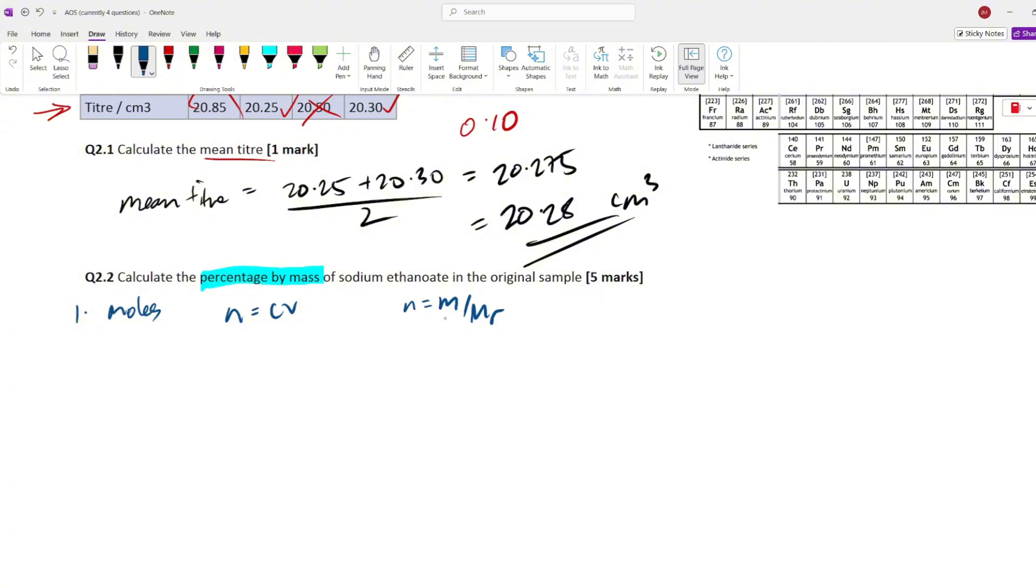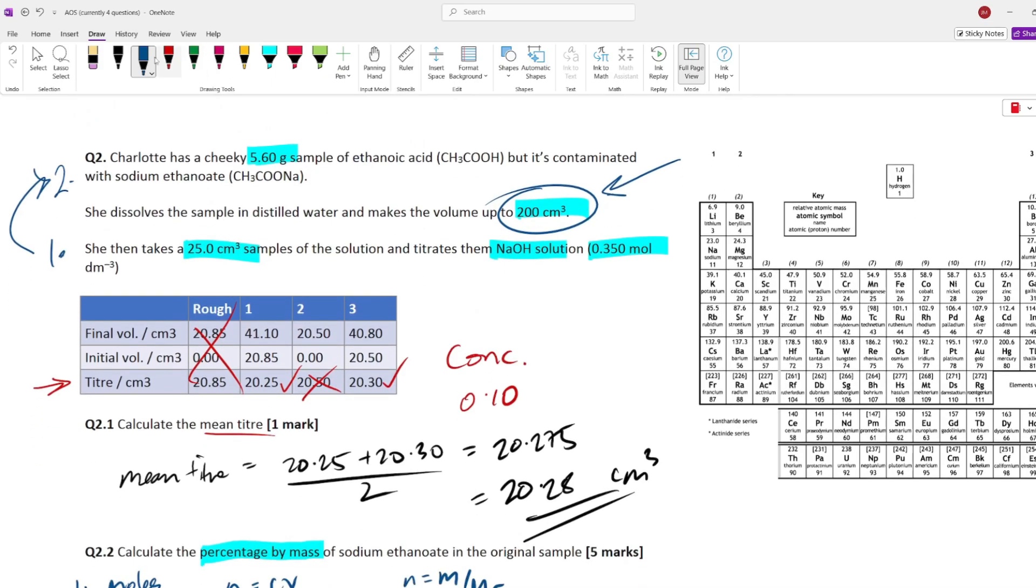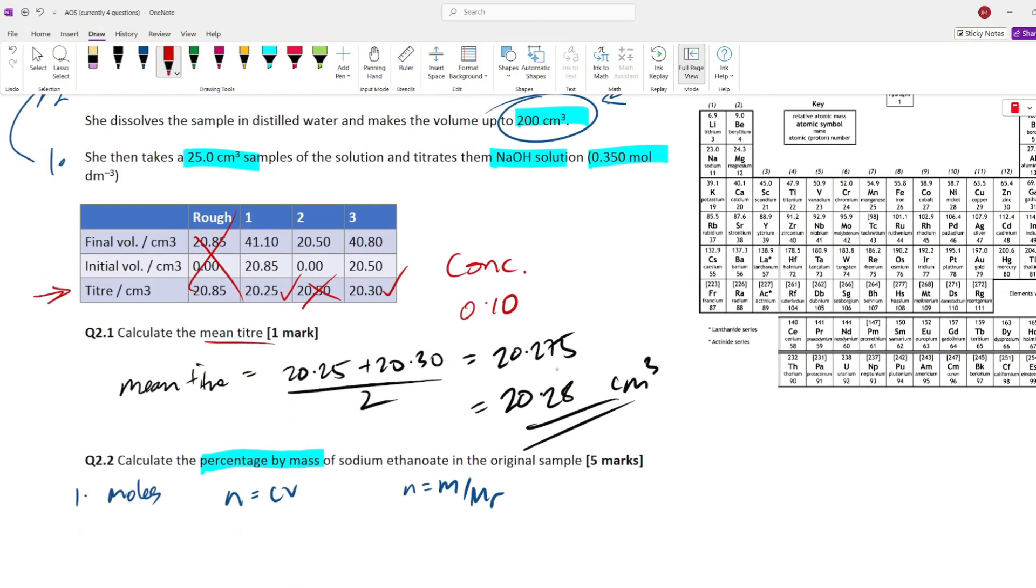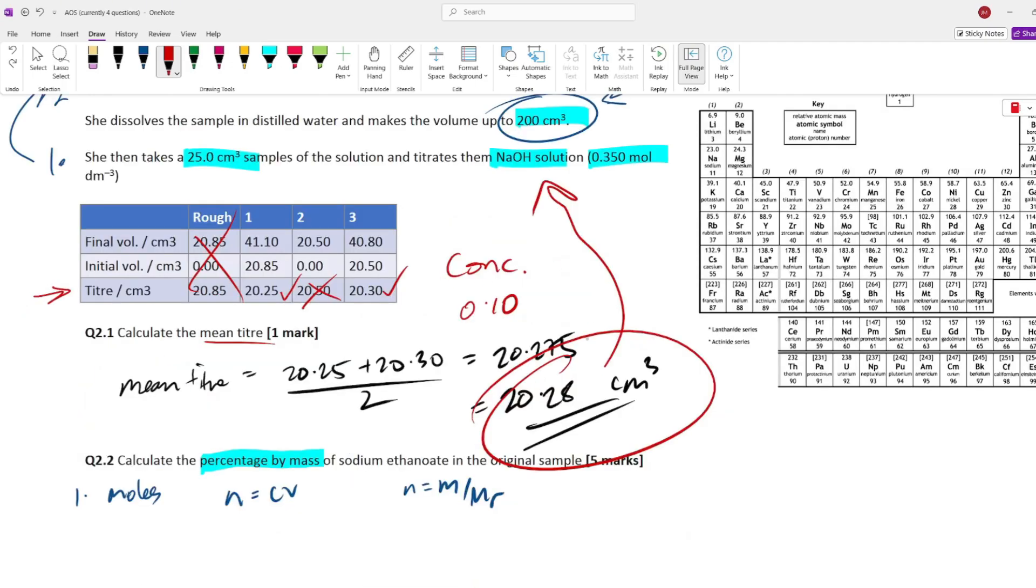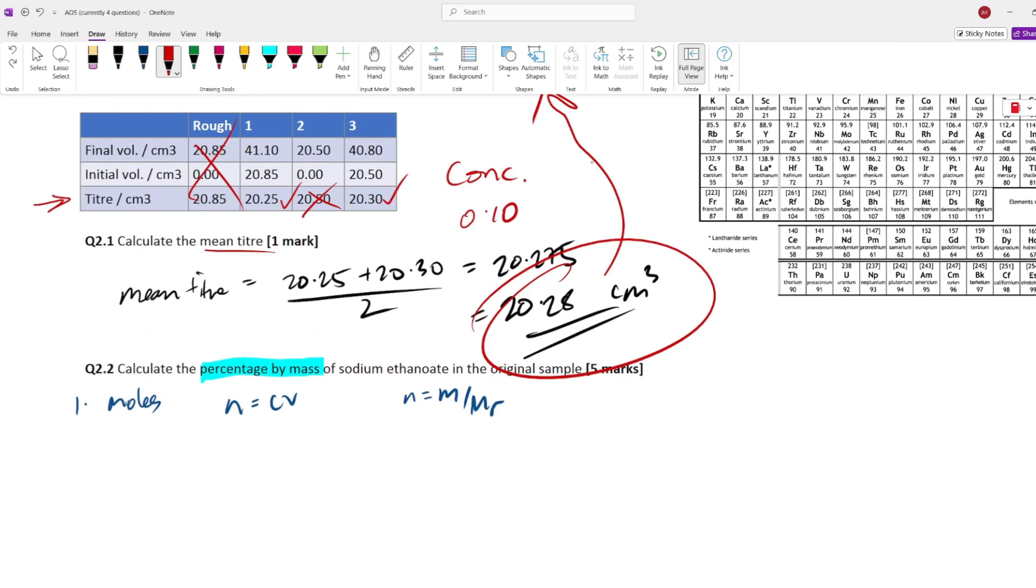So, what we're going to use is our mole equations, n equals and n equals. What are these two guys going to be? We've got n equals involving solutions, CV, and involving mass, m over Mr. So, what we can do is we can look into our question and look what variables have been given to us. We've got the mean theta that we calculated. So, this is the volume of sodium hydroxide, because we've got 25 centimeters cubed of this contaminated acid that we're reacting.